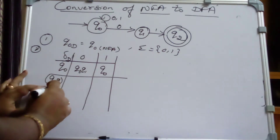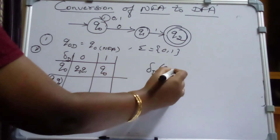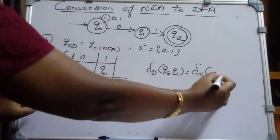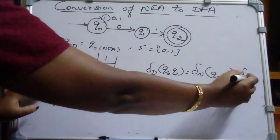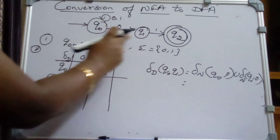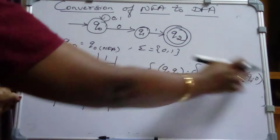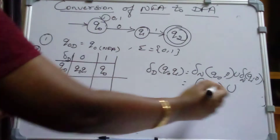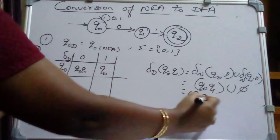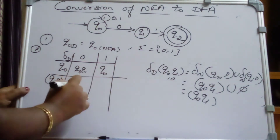Now find the transitions for state {Q0, Q1}. The DFA transition δD({Q0, Q1}, 0) equals the union of δN(Q0, 0) and δN(Q1, 0). From the NFA, δN(Q0, 0) = {Q0, Q1}. And δN(Q1, 0) — there is no transition, it is null. So {Q0, Q1} union null gives {Q0, Q1} itself. Therefore, {Q0, Q1} on 0 moves to {Q0, Q1}.